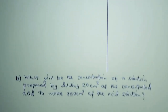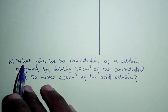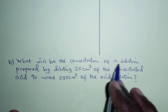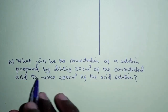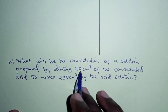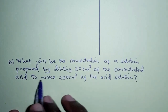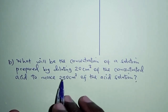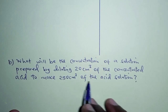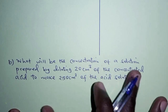And then for part B, what will be the concentration of a solution prepared by diluting 20 cubic centimeters of the concentrated acid to make 250 cubic centimeters of the acid solution?